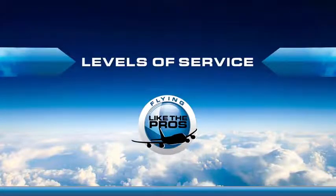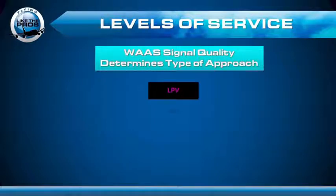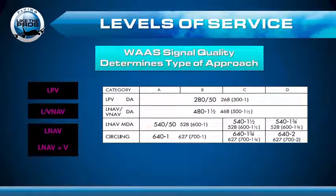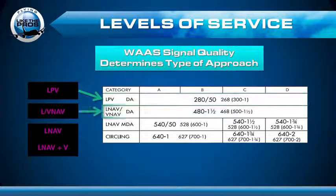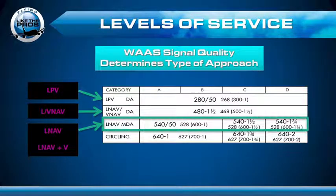One of the great things about WAAS is that it can provide multiple levels of service for RNAV approaches. What the G1000 does is determine how good the navigational signal is while you are flying, and then it tells you what kind of approach it can provide. It does this by enunciating either LPV, L/VNAV, LNAV, or LNAV+V. As the pilot, you determine which minimums to use as published on the chart. If you get the LPV enunciation, you'll use the LPV decision altitude. If you get the L/VNAV enunciation, you'll use the LNAV/VNAV decision altitude. And if you get either LNAV or LNAV+V, you'll use the LNAV MDA minimums.